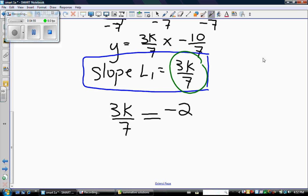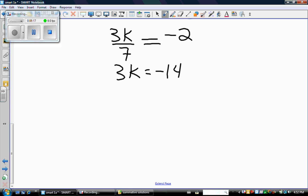So isolating k, my first step is to get rid of divide by 7. To get rid of divide by 7, I'm going to multiply both sides by 7. Oh! That's interesting. Let's try that again. I'm going to multiply both sides by 7. Negative 2 times 7 is negative 14. Then I need to divide both sides by 3. So I get k equals negative 14 over 3.